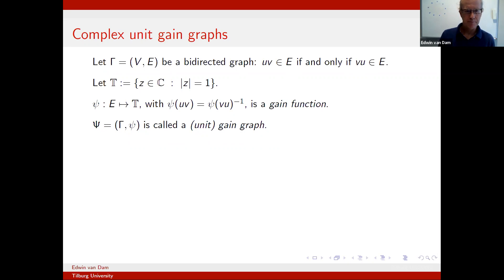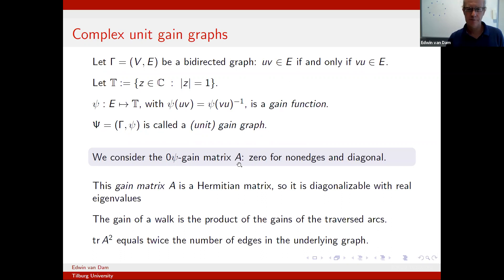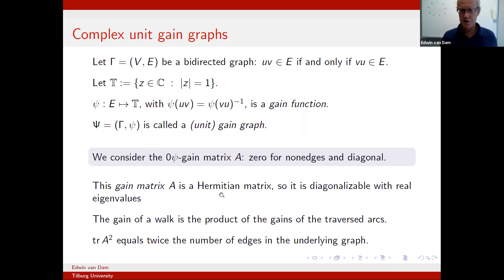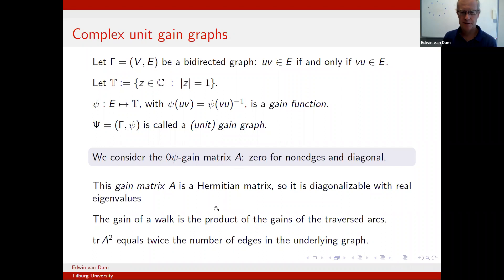Like with the ordinary adjacency matrix, we put zeros if there's no edge, and we put the gain on the pair uv and on the pair vu the inverse of that. That makes it a Hermitian matrix, which as you know is diagonalizable with real eigenvalues — a nice thing to have. When we walk in a graph, the gain of that walk is what you expect: it's just a product of the gains of the arcs that you walk through.